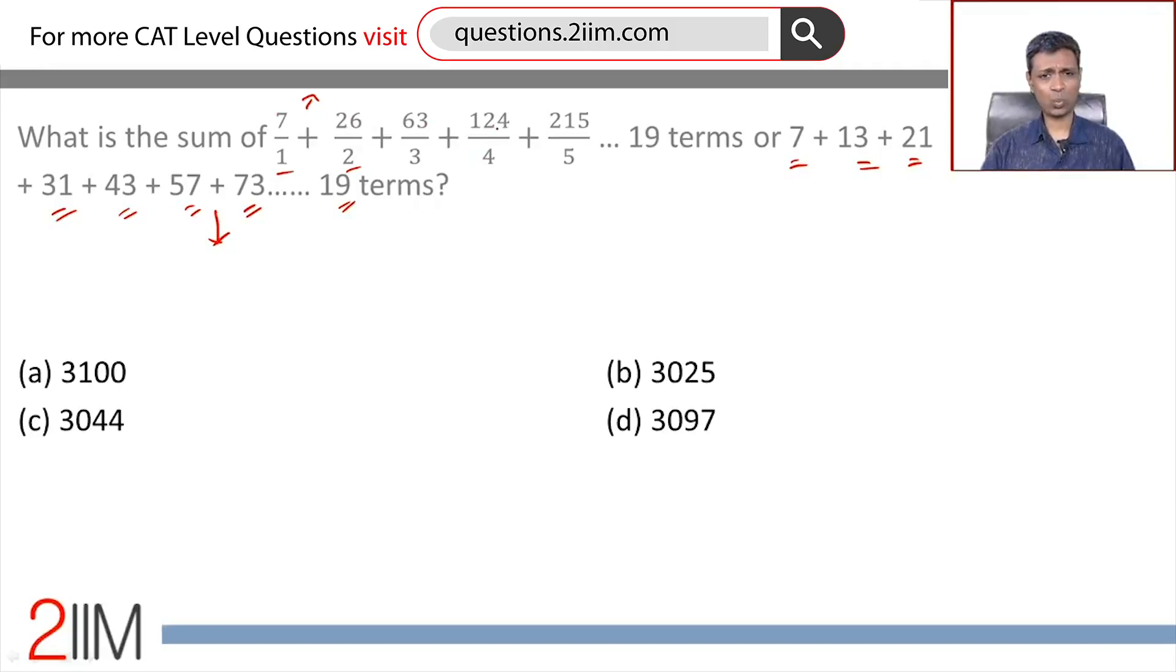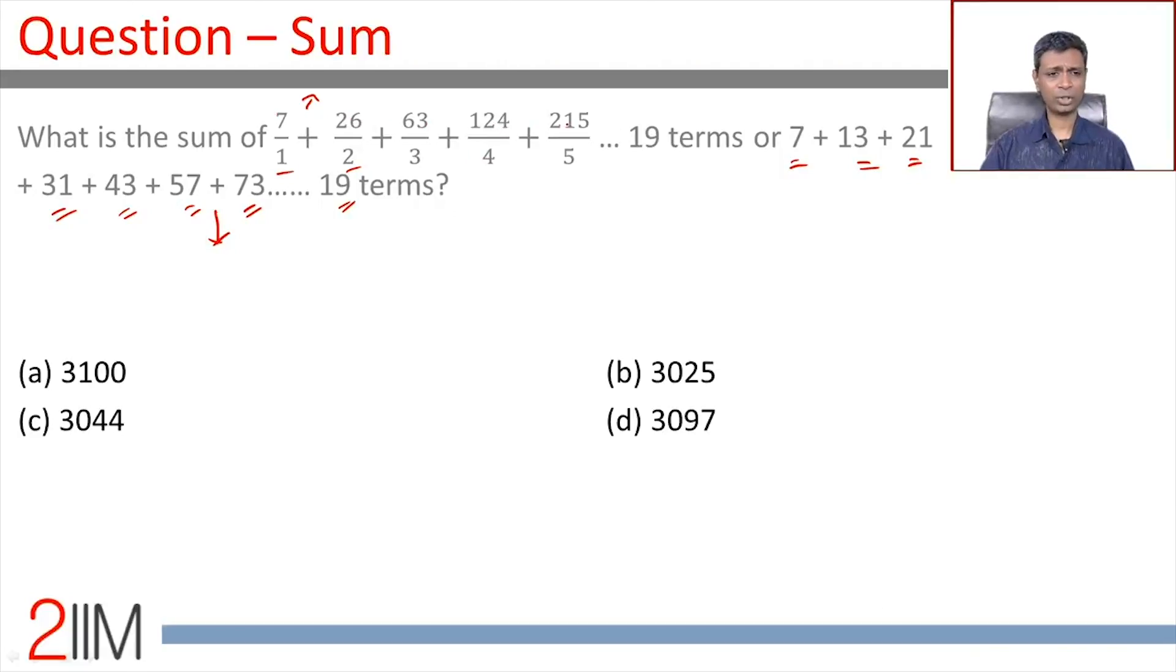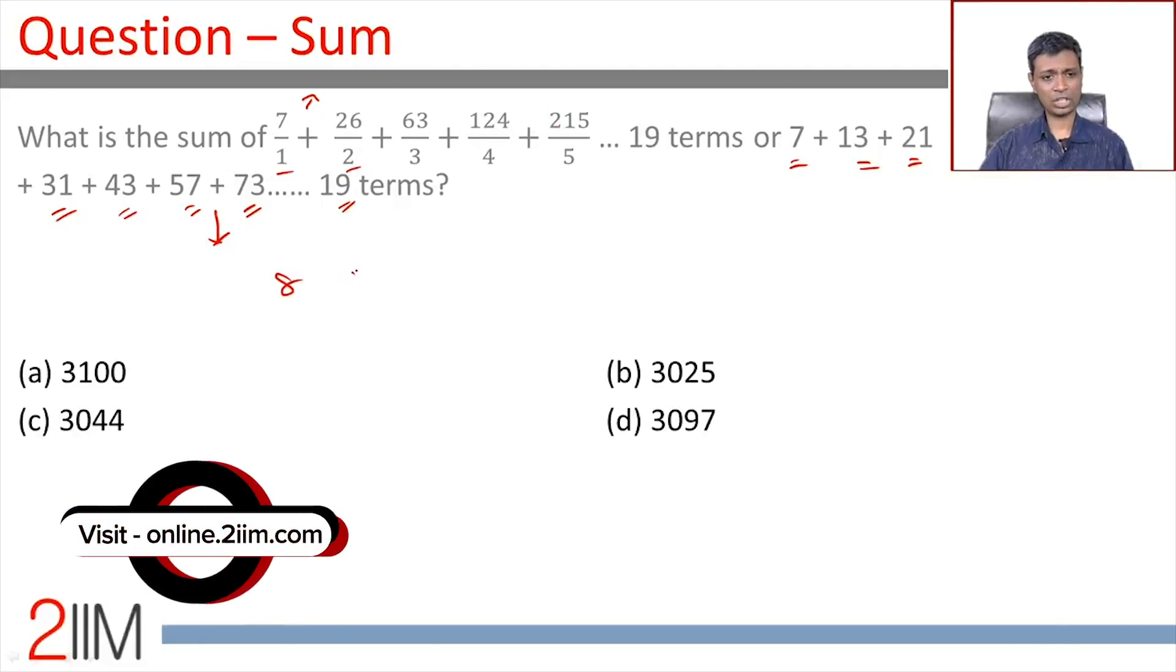7, 26, 63, 124, 215, what is the feature of these numbers? Think about this, add 1. What is the feature of 8, 27, 64, 125, 216?